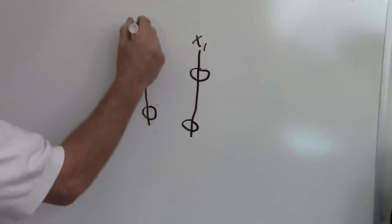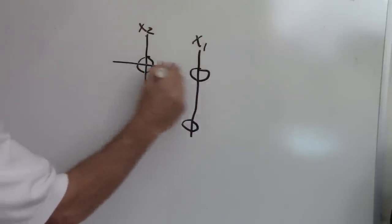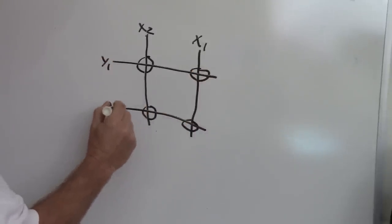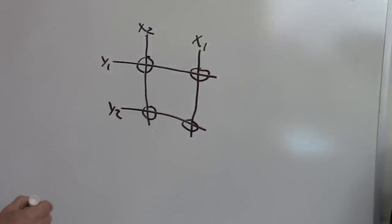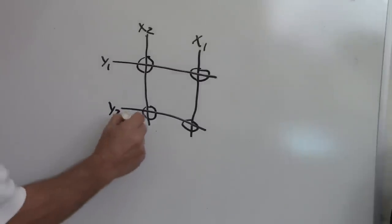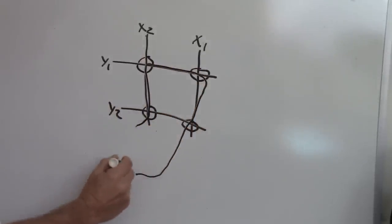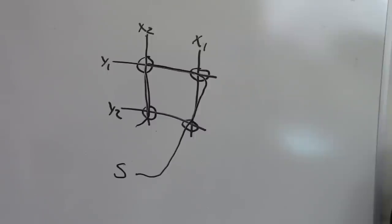To read from it, a particular core is selected by sending half the current needed to flip the field into a particular X and Y select line to a 0. The core at the intersection does nothing if it holds a 0, but changes state if it was a 1. There's a little delay before this happens. When the core changes state — if it was a 1 — it induces a small signal in the sense wire that is detected. Obviously this is a destructive read, so the data must then be written back into it.